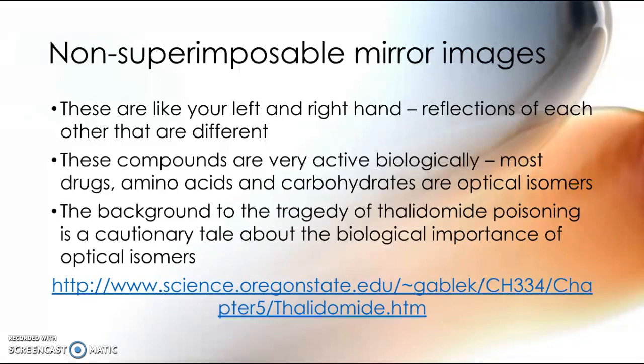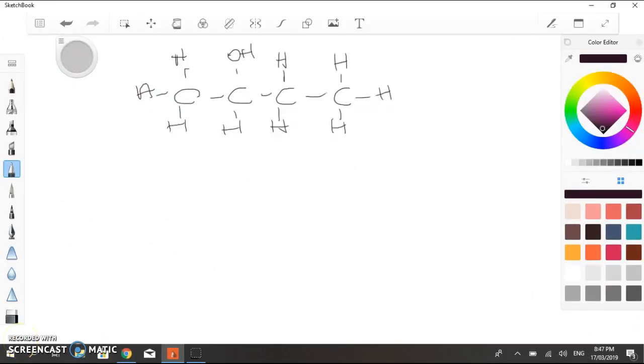But before I get into that, I want to talk a little bit more about what is required in this standard regarding optical isomerism. So optical isomers. These are compounds that have four different atoms or groups of atoms attached to a central carbon atom. And I want to show you what we're talking about with that. So if we have a look at this molecule here, this is butane-2-ol.